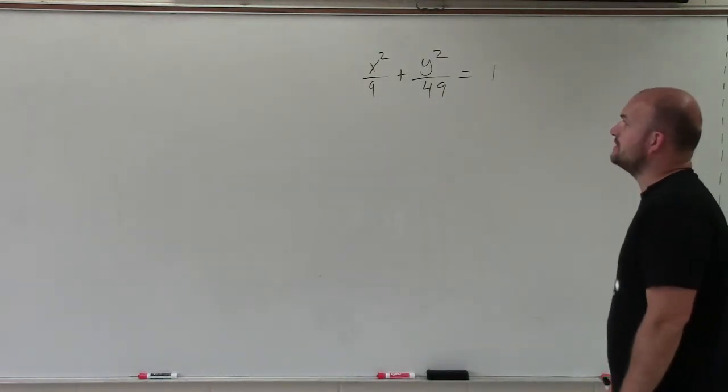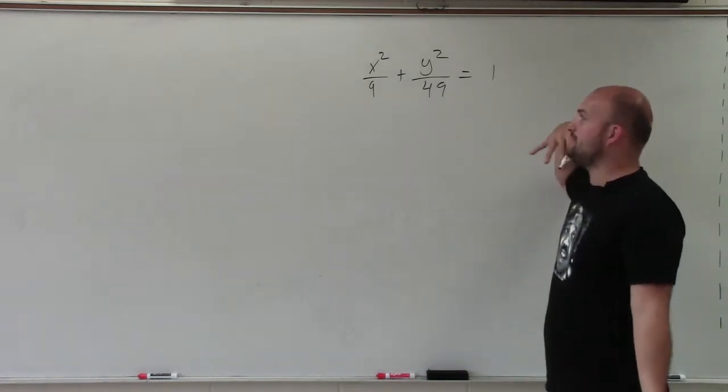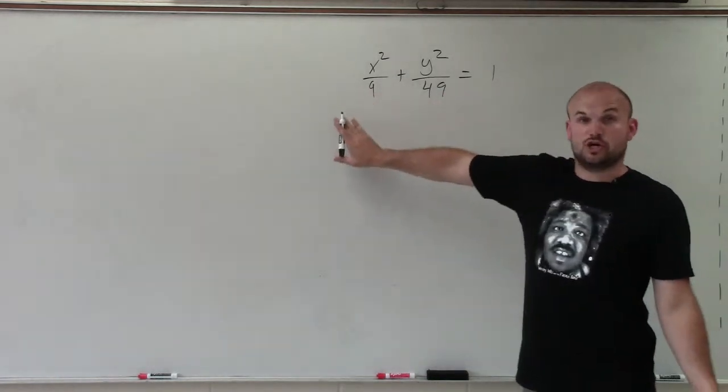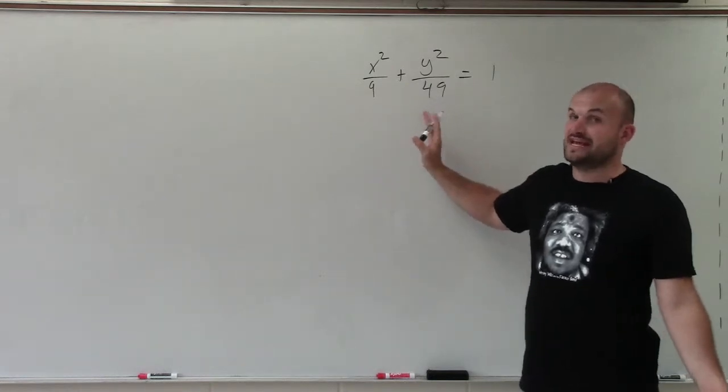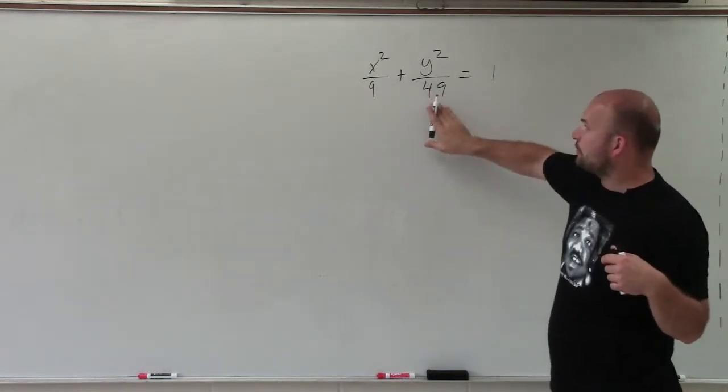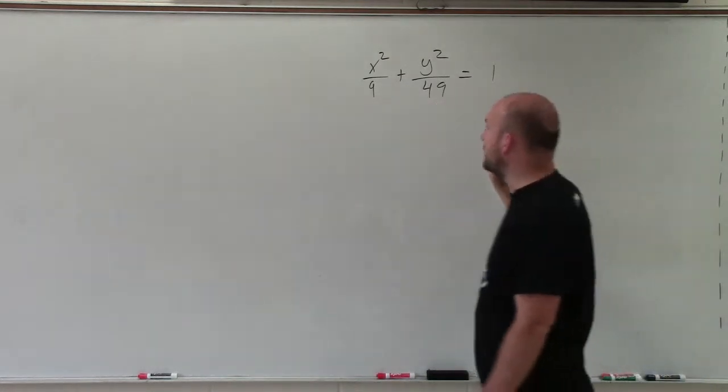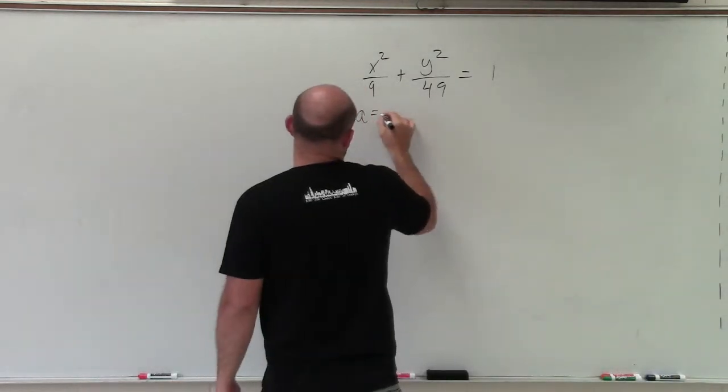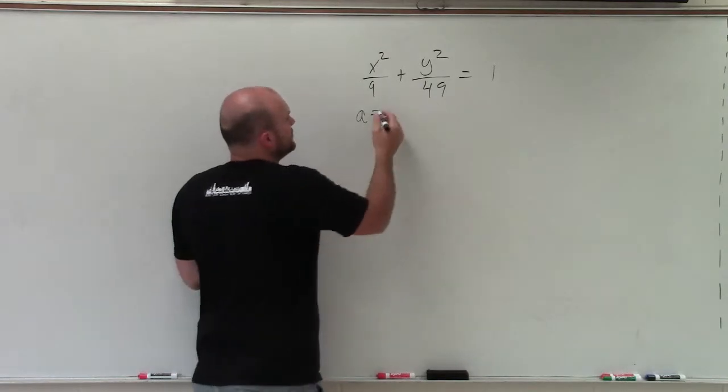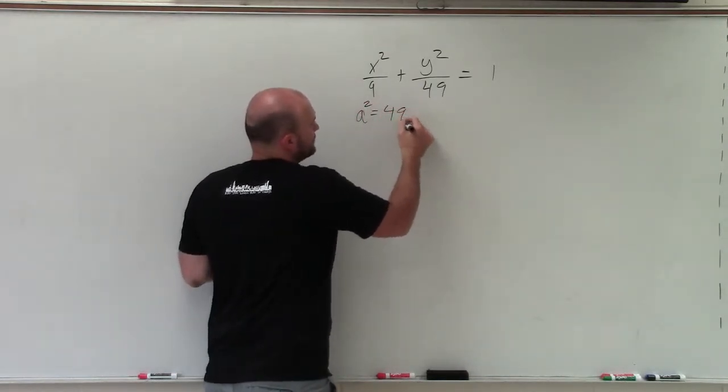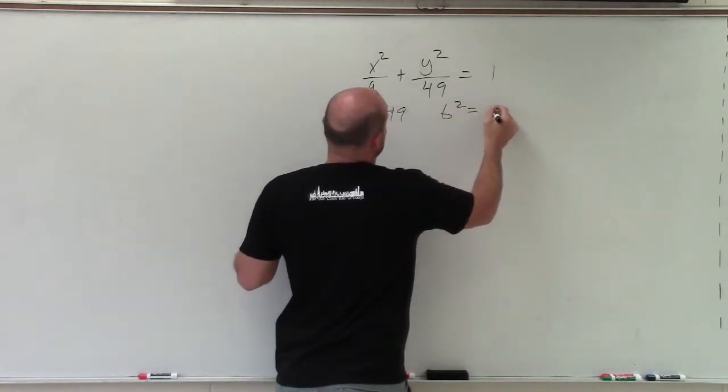So first of all, let's go ahead and see the main important thing when looking and graphing an ellipse is determine which is going to be our larger values. If our values for our denominators are the same, then we have a circle. But since 49 is larger than 9, I know 49 is going to be my larger value, which I will call a. So always the larger value, a squared is equal to 49, and b squared equals 9.